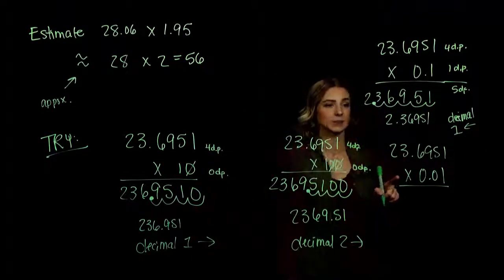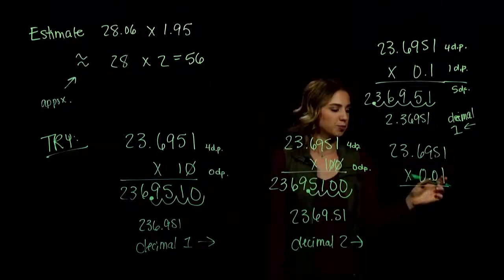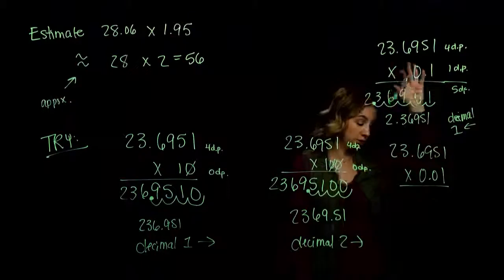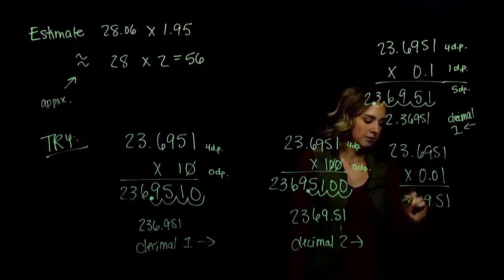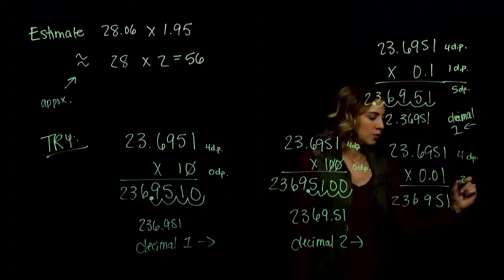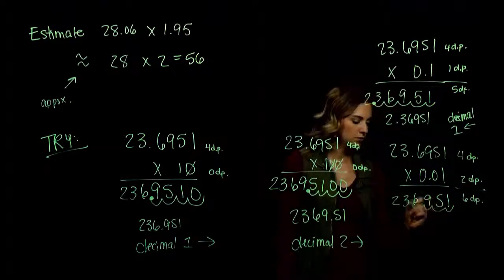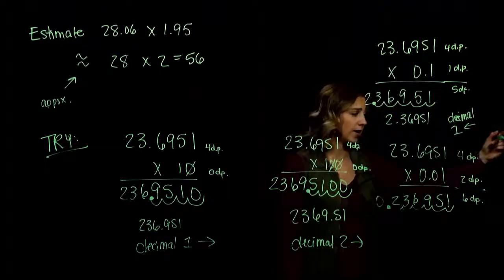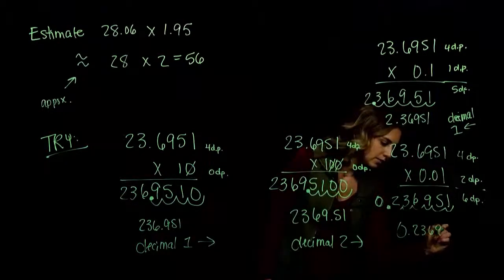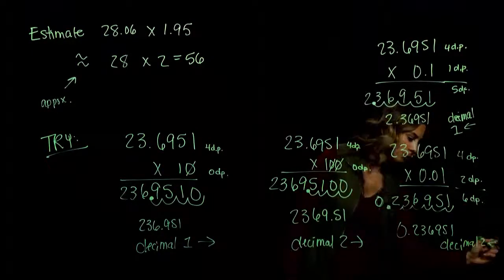In this last case, multiply by 0.01. Take the decimal point and move it two to the left, since we're multiplying by an even smaller value, making an even smaller number. If you don't see it, do the product out — still produces the same result. We have four decimal places up here and two down in 0.01, so in total we have to move in six. Moving in six gives us 0.236951. Our decimal point had to move two to the left.